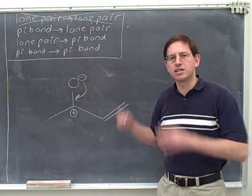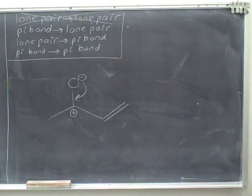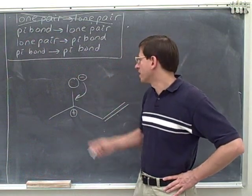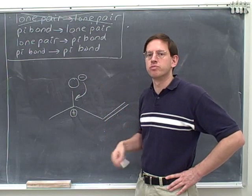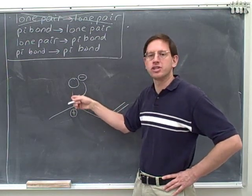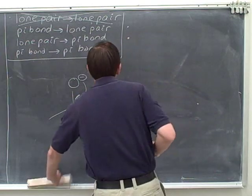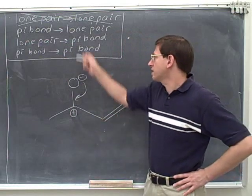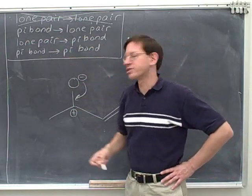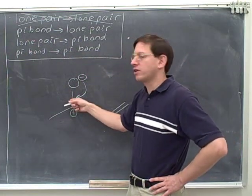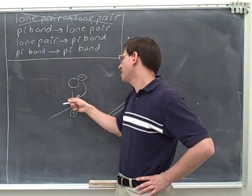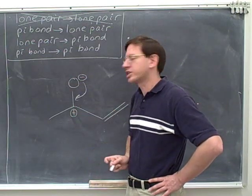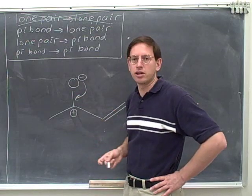Does this arrow satisfy the as close as possible principle? Now we're taking a lone pair and making it into a pi bond — the tail is on the negative charge, meaning we're moving the lone pair, and the head is pointing to the bond region, so we're forming a pi bond. So the key is that the pi bond has to be as close as possible to the original lone pair. This really is as close as possible because this pi bond is still connected to the oxygen — you couldn't get any closer. So this would satisfy the as close as possible rule.